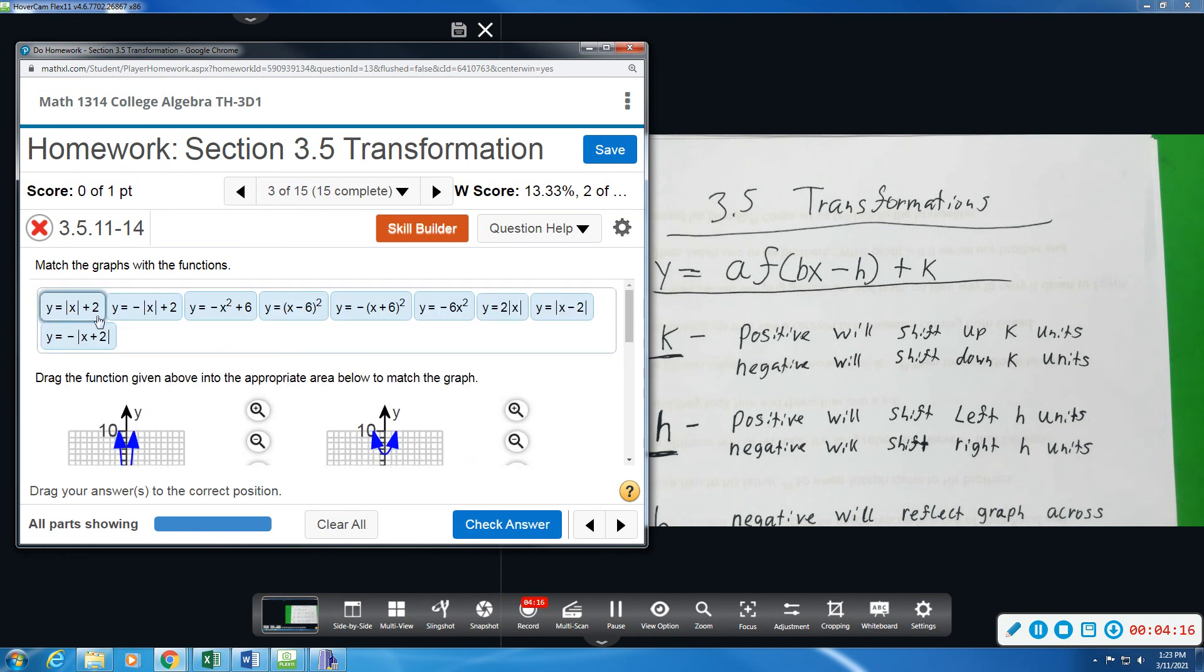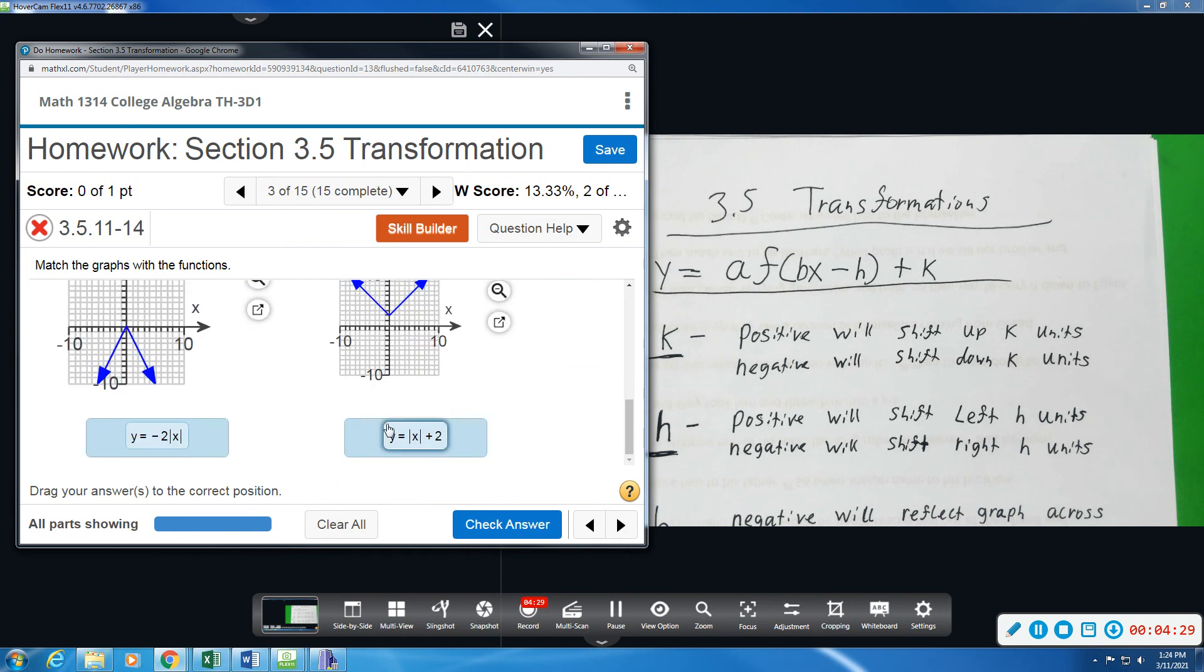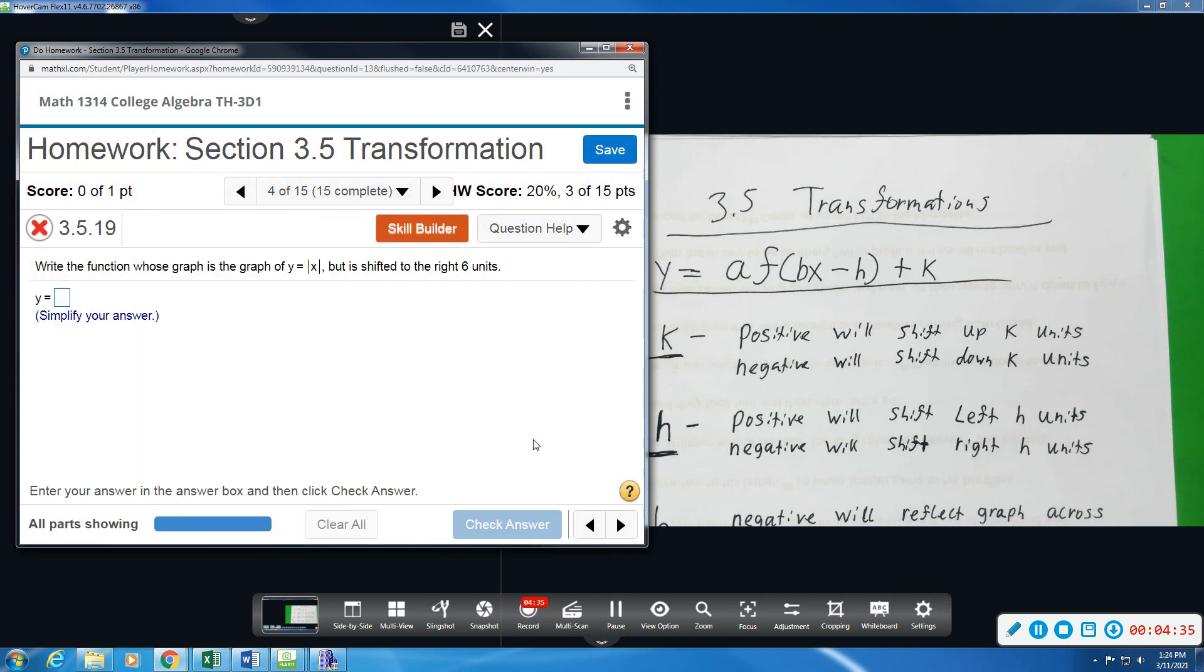So this first one, plus two, this one also has a plus two, but it's negative. It flips, and ours doesn't. And this plus two is inside, which would shift left to right. So there's only one that could possibly match that one.